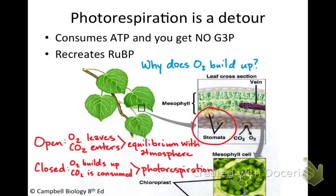That water is causing turgor pressure, it's keeping the cells of the plant in the shape that they should be in, it's supporting the plant. So water is most important. So they close the stomata to save the water.